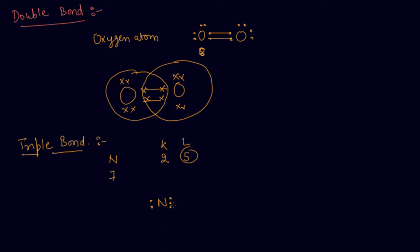The other nitrogen atom also has five electrons in the outermost shell. When they come together to form N₂, these atoms share three pairs of electrons, forming a triple bond between the two nitrogen atoms.